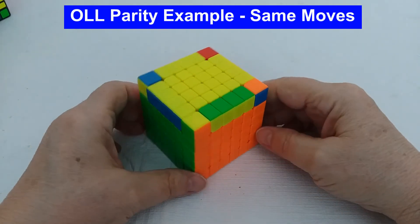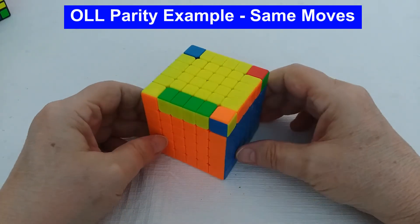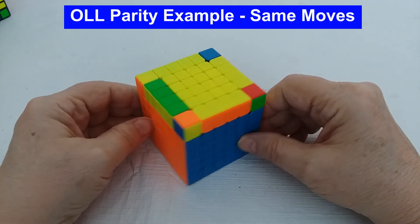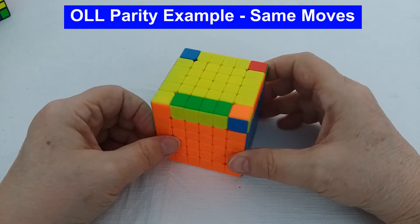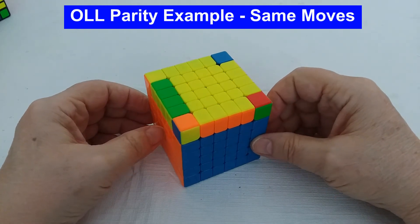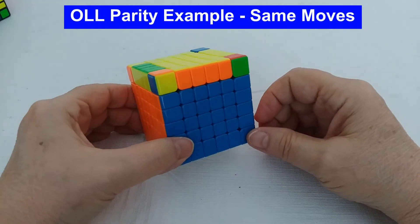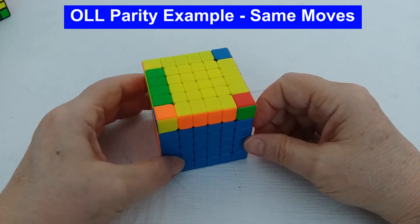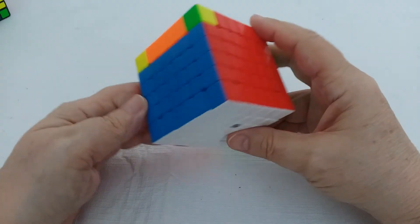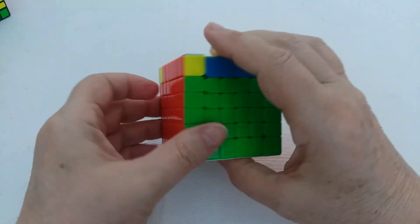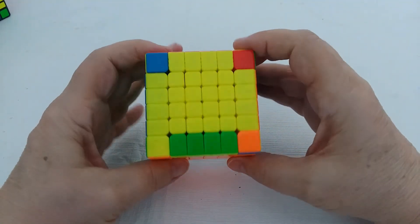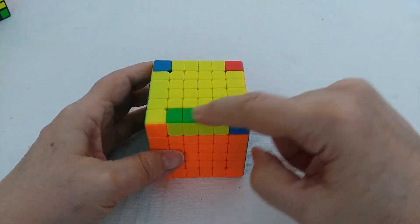Here's an OLL parity that you get sometimes, especially on even cubes, larger cubes. The algorithm I use to solve it is the same as the 15 move algorithm that I just explained for last edge parities. Here's the situation: we have all of the first layers done, white on the bottom. I use the reduction method, and we have this situation.